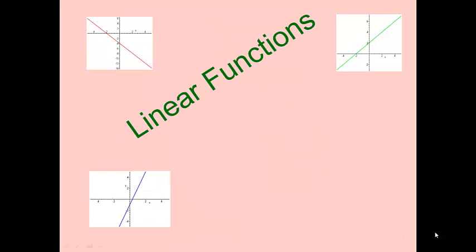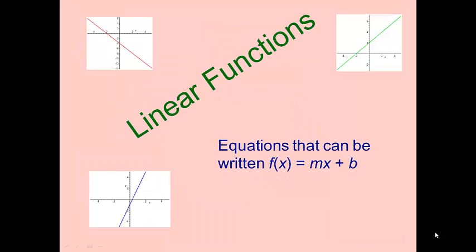First of all, linear functions. Those are functions that can be represented as f(x) = mx + b. We remember that m is the slope and b is the y-intercept. As long as our slope is not zero, the domain — the defined values of the function for x — would be all real numbers, and the range would be all real numbers as well.